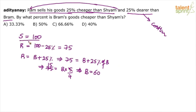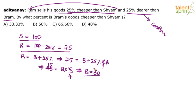So Shyam is 100, Ram is 75, Bram is 60. You can cut some of these steps — you don't have to write them all out. You can directly write, in fact you should start with: 75 equals 5/4 × B.